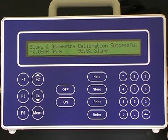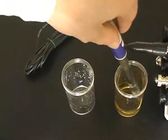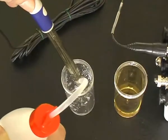The instrument then displays the sensor performance, a slope and a symmetry. Remove the pH sensor from the 6.88 buffer and rinse with deionized water before use.